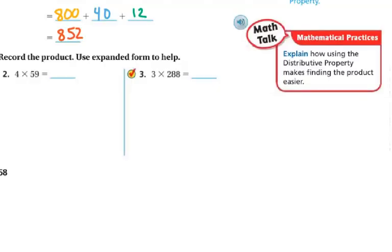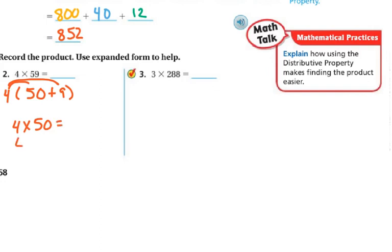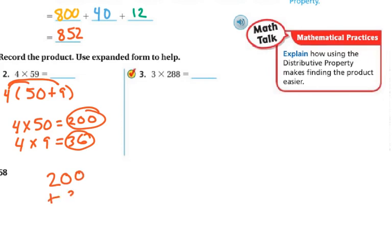Let's record the product using expanded form. We've got 4 times 59. If I break apart 59, that's 50 plus 9 in expanded form, times 4, using the distributive property: 4 times 50, and 4 times 9. 4 times 5 is 20 plus the zero, making that 200. And 9 times 4 is 36. So I add my two partial products: 200 plus 36. 6 plus 0 is 6, 3 plus 0 is 3, and 2 plus nothing is 2. The answer is 236.